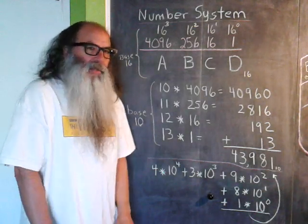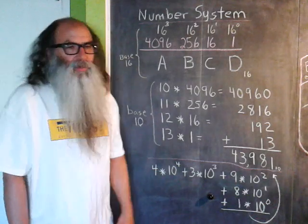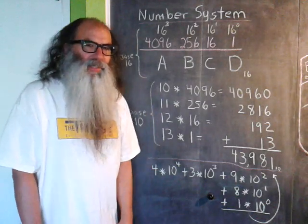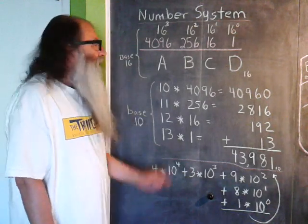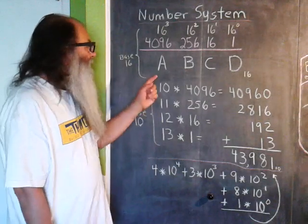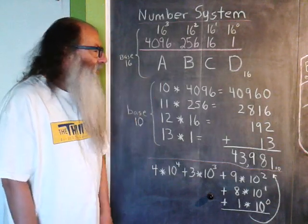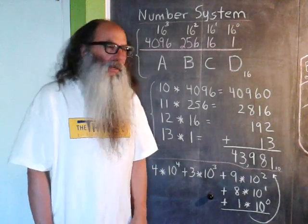The base 10 number system has 10 digits, 0 through 9. The base 16 number system has 16 digits, 0 through 9, but then they resort to using letters to represent the other digits. In other words, A is 10, B is 11, C is 12, D is 13, and so on.